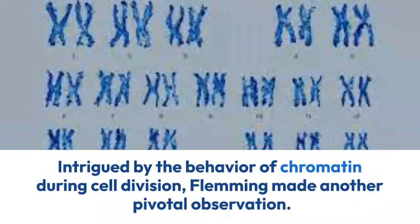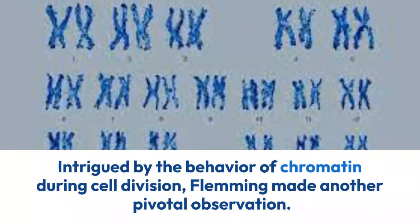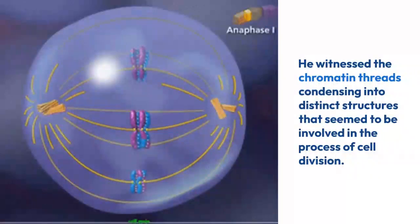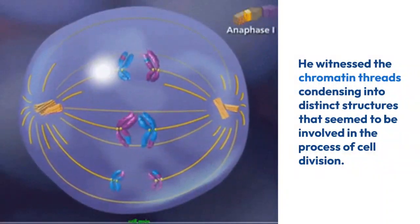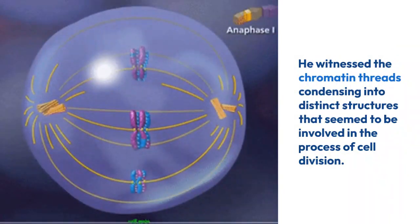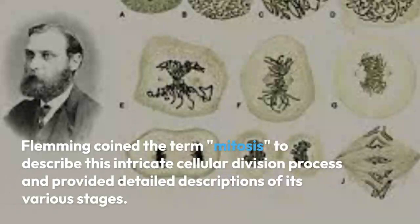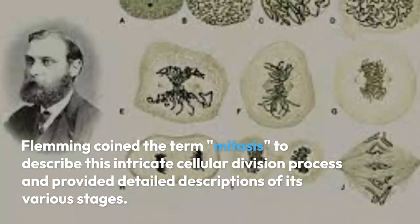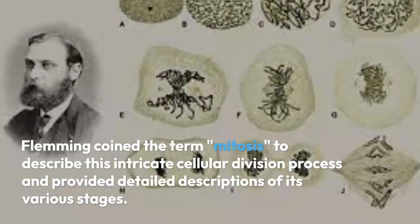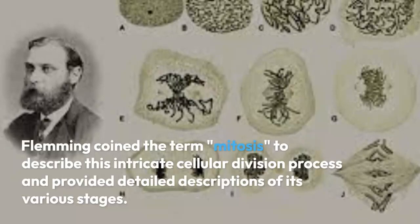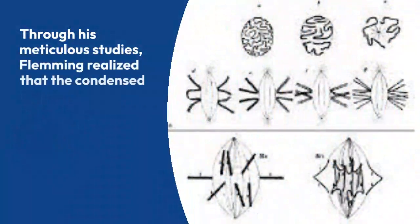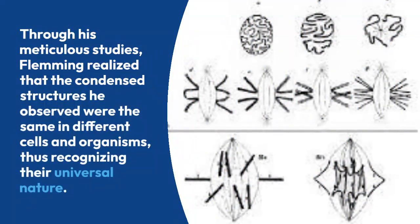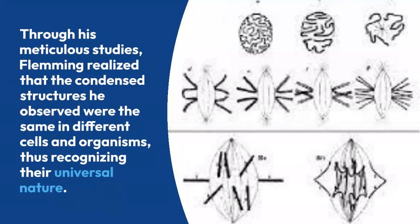Intrigued by the behavior of chromatin during cell division, Fleming made another important observation. He witnessed the chromatin threads condensing into distinct structures that seemed to be involved in the process of cell division. Fleming coined the term 'mitosis' to describe this intricate cellular division process and provided a detailed description of its various stages.